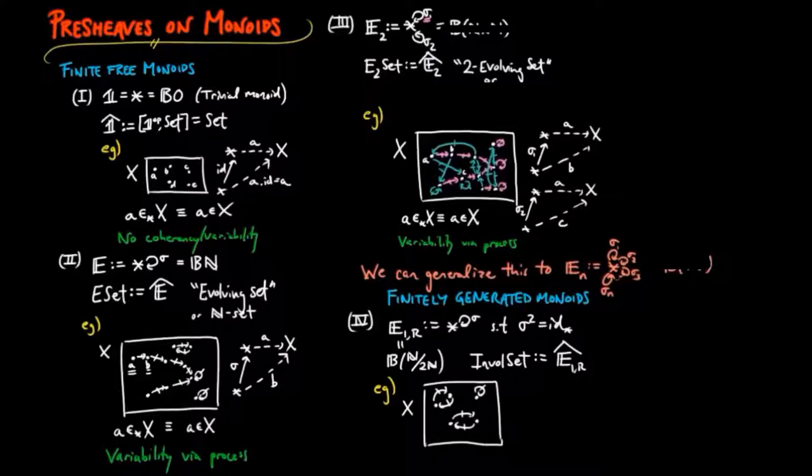So, for example, if applying sigma to a figure A produces a figure B, then applying sigma to B must get us back to A.